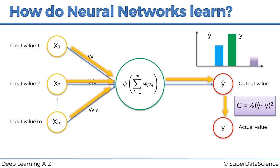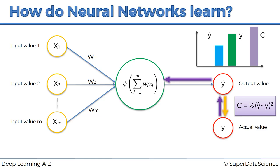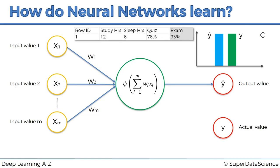So from here, once we've compared y-hat to y and computed the cost function, we feed this information back into the neural network — it goes to the weights, and the weights get updated. The only things we have control of in this simple neural network are the weights: w1, w2, all the way to wm. Our goal is to minimize the cost function, so all we can do is update the weights — tweak them a little bit. We agree that we update the weights and then continue.